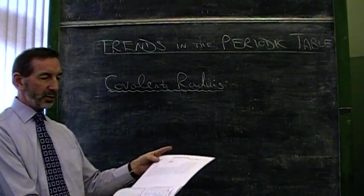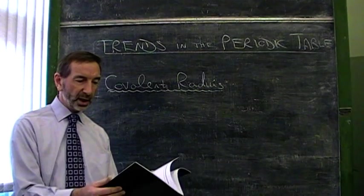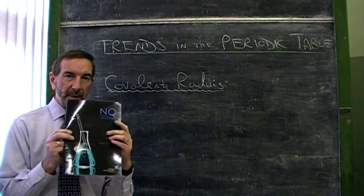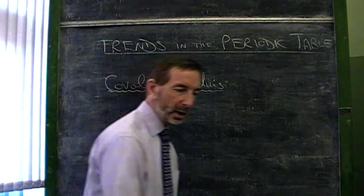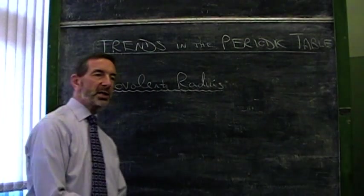Or there's Covalent Radius, or Ionization Energy, Electronegativity. All the trends can be found simply by consulting the book. However, what you won't find in the book is an explanation for the trends.